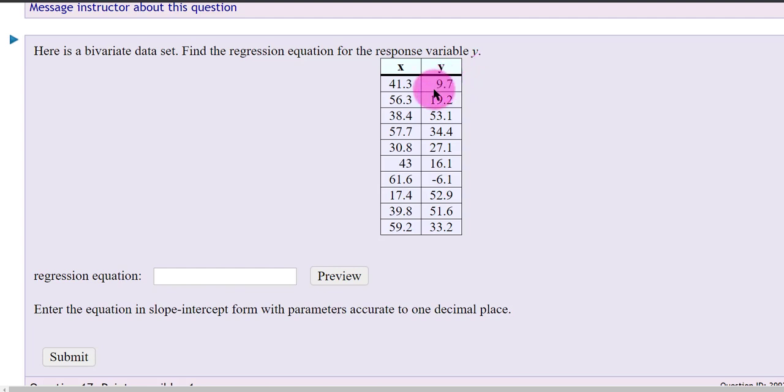In this video, we're going to do a problem from the homework in Experience 12. Here we've got bivariate data. Find the regression equation for the response variable y. We want to type the equation in slope-intercept form. We're going to do this in Google Sheets.